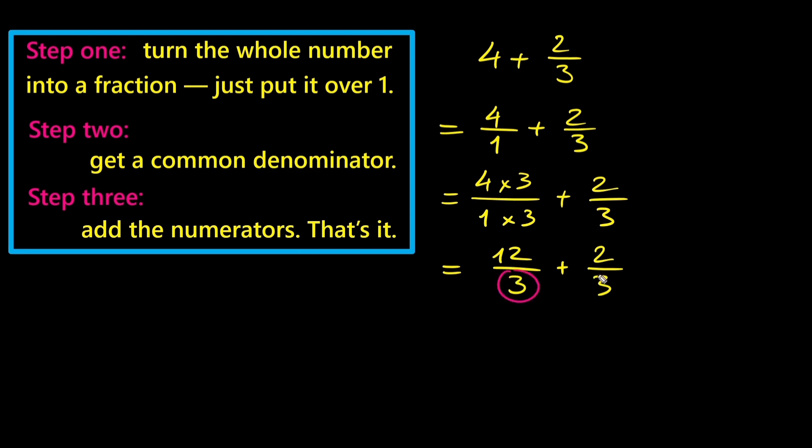Now that we have the same denominator, we can add the numerators. Twelve plus two is fourteen. So the answer is fourteen over three.